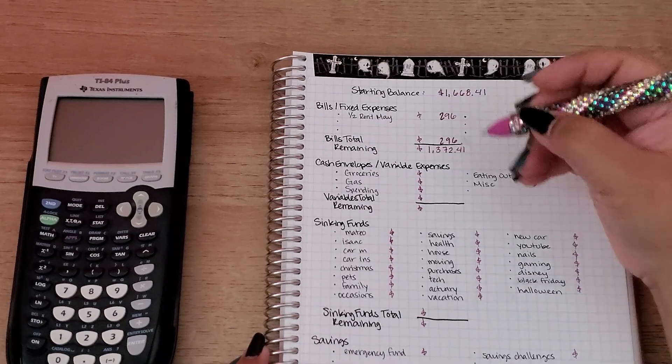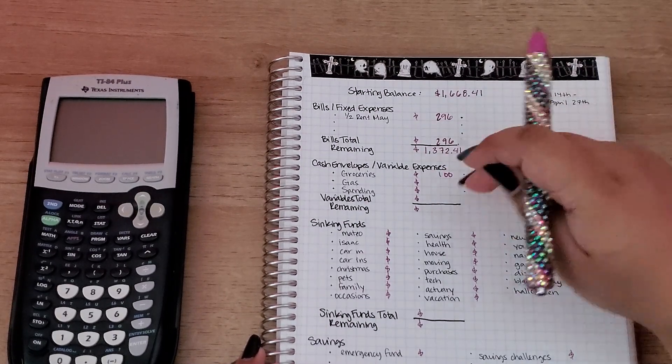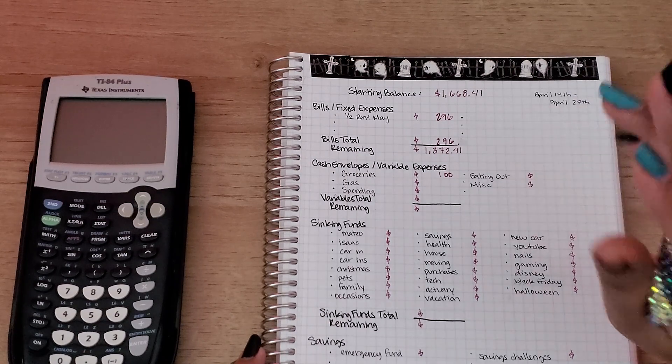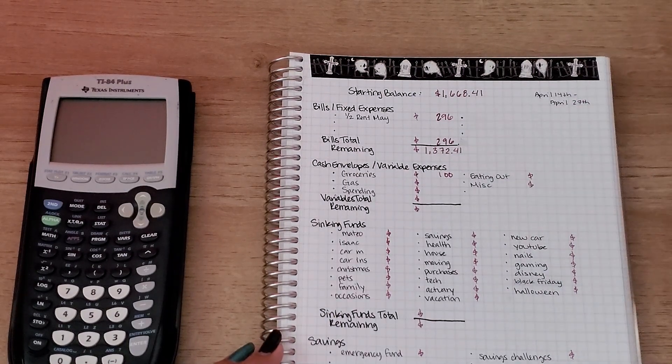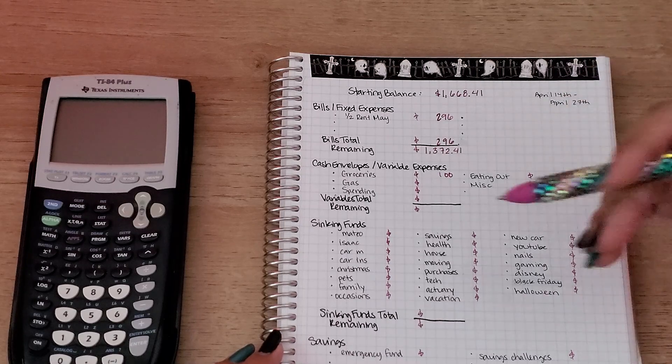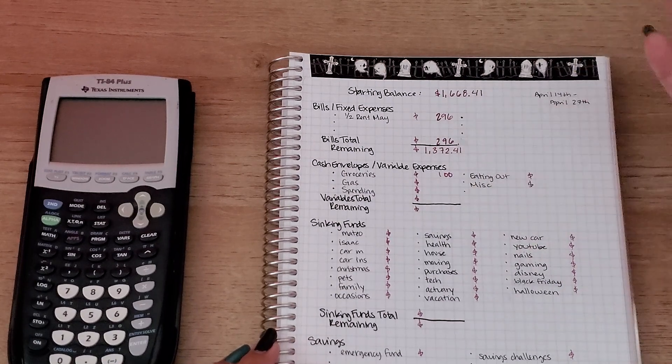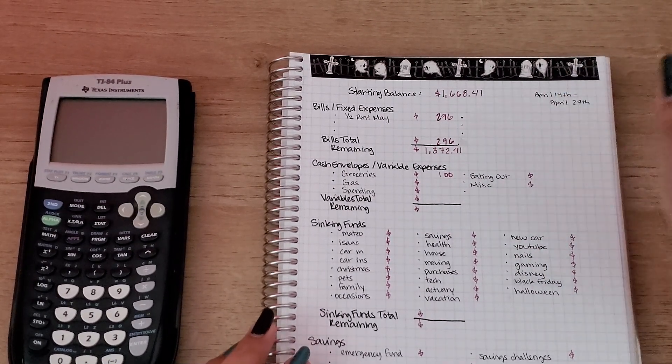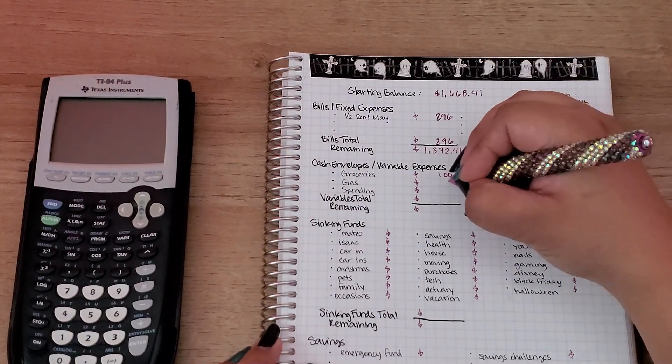So groceries is going to get $100. I decided to up it. I'm buying my own groceries right now just because my boyfriend is still currently away doing stuff with family. He usually would be responsible for the both of us when it came to groceries, but he's currently away so I'm dealing with that, which is fine. Gas, I'm actually going to put zero.